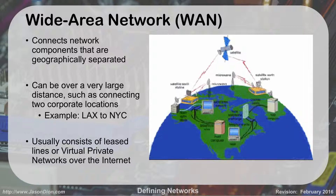That brings us to the WAN, the wide area network, which connects networks that are geographically separated. For instance, an office in Los Angeles and one in New York can be connected to create a wide area network. They can be private, maintaining their own network, or part of the larger public network like the internet. The military has bases all over the world on their own wide area network completely separate from the internet — traffic from Japan to Washington D.C. won't even touch the internet. The most common WAN for everyday users is the internet, letting you access websites in Japan or Singapore from D.C.